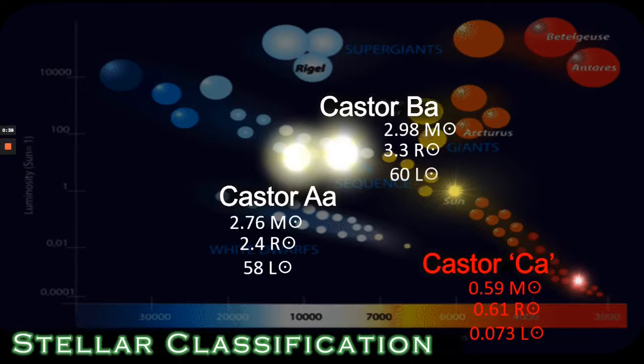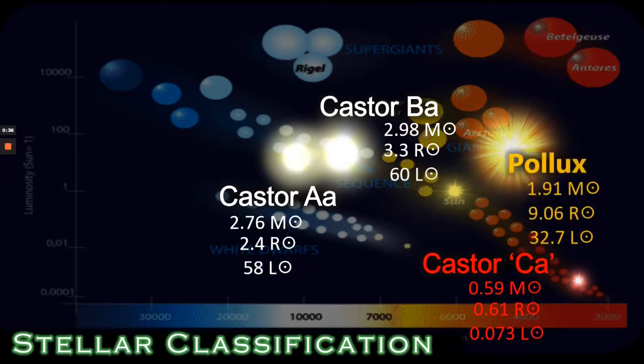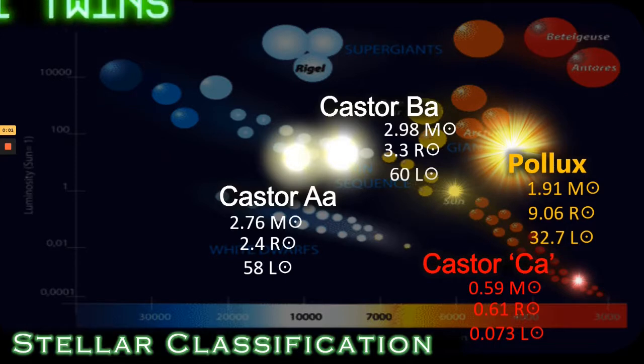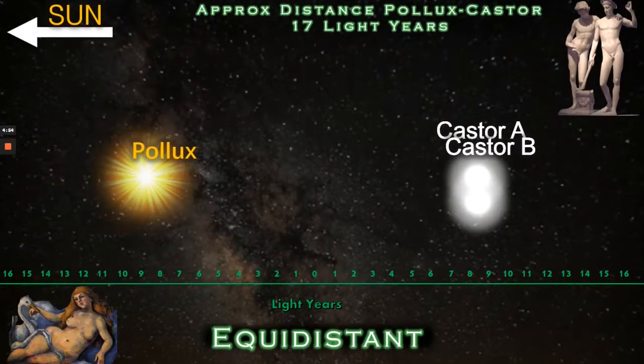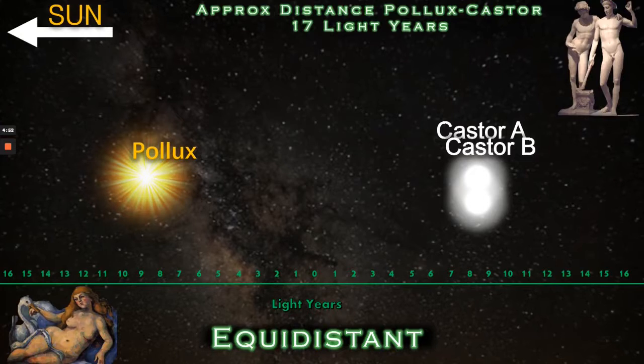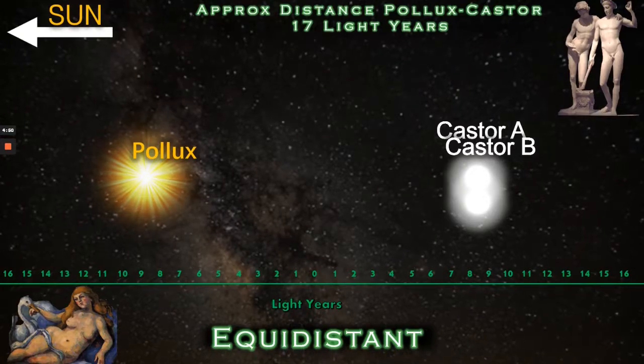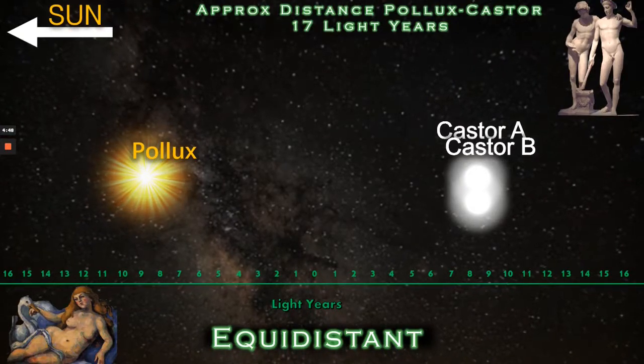Now of course this video is not only about Castor it's also about Pollux and of course Pollux along with the Castor system which to the naked eye is only one star are known as the Gemini twins. So what we're going to do now is we're going to make it a bit more interesting.